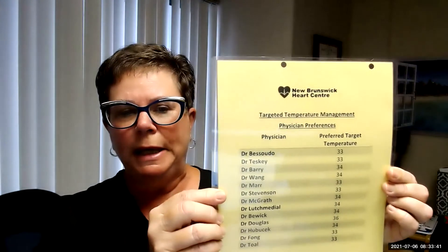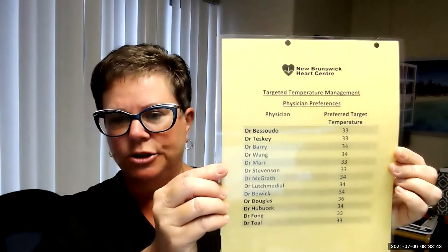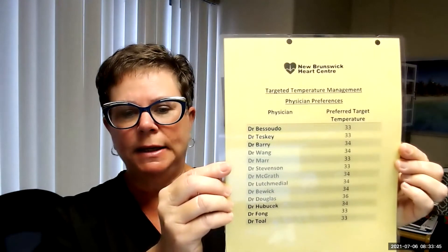So let me just go over a few features. So first of all, this will be in the basket attached to the device and it is all of our physicians and their preferred target temperature. So it defaults to 33 degrees. So if you have a physician who wants a different temperature, you're going to have to go to the little temperature icon and use a plus or minus arrow to change the set point.